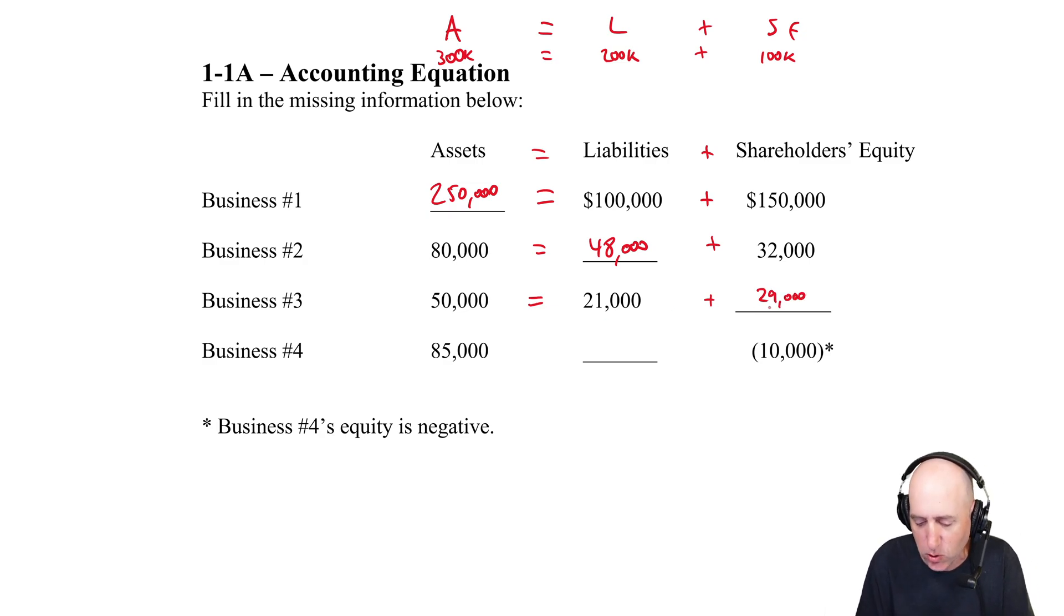In this case, the liabilities have got to be $10,000 more than the assets. Assets equals Liabilities plus Shareholders' Equity - we'll need $95,000 plus negative 10 is 85. So it works, but we have more debts than we have assets - a bad place to be.